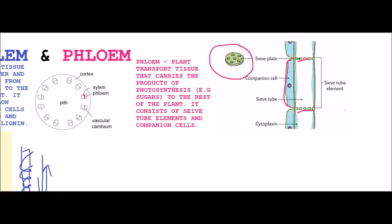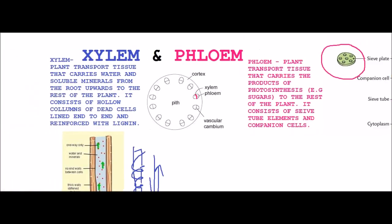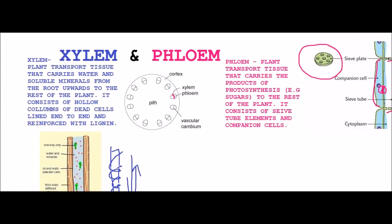The cytoplasm of the companion cells and the sieve tube elements are linked through many plasmodesmata. There would just be a thing here and that would be called a plasmodesmata. These are gaps in the cell walls allowing communication and flow of minerals between the cells. And that's basically a brief introduction to the xylem and the phloem. I'll talk to you again soon.